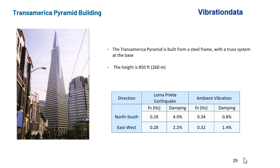We're still in the Bay Area. Here's another landmark, the Transamerica Pyramid Building. It's built from a steel frame with a truss system at the base. The height is 850 feet or 260 meters. These buildings can be excited by wind or earthquake, the primary sources of excitation.